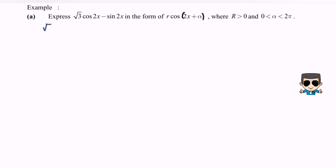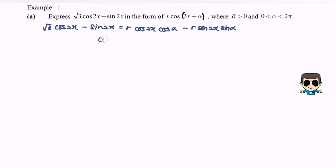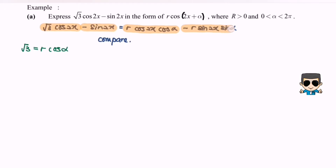So √3 cos2x minus sin2x equals R cos2x cosα minus R sin2x sinα. Next I'm going to compare coefficients. By referring to √3 cos2x compared with R cos2x cosα, we have √3 = R cosα. And from the sin2x terms, negative sin2x equals negative R sin2x sinα, so 1 = R sinα.